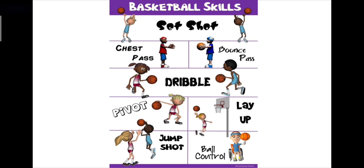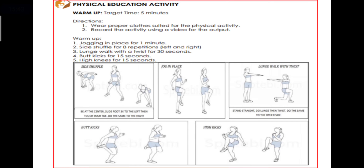For the physical education activity this week, you have to do the following exercises: side shuffle as your warm-up, then jog in place, lunge walk with twist, butt kicks, and high kicks. After that, you will also do planking and burpees — all in one video presentation lasting two to three minutes. Record the video and send it to the Messenger account of your MAPEH teacher.